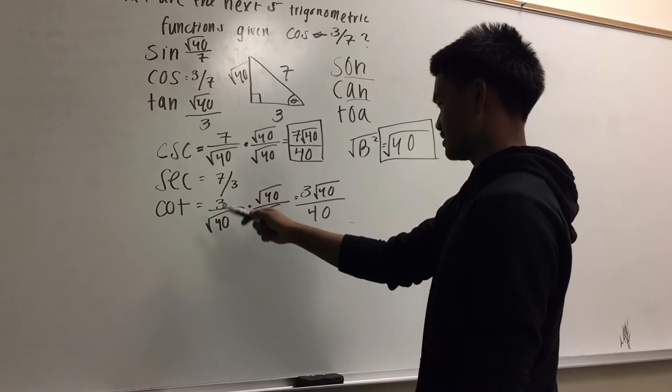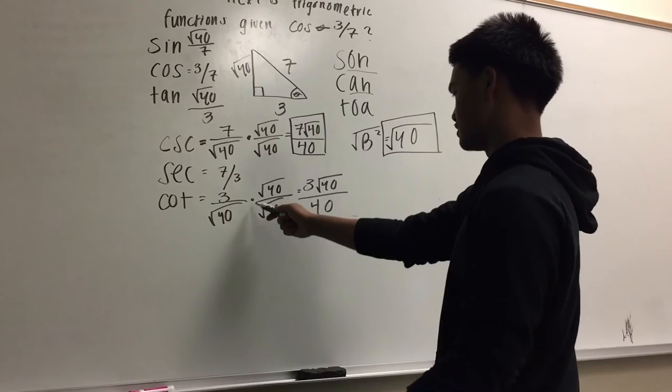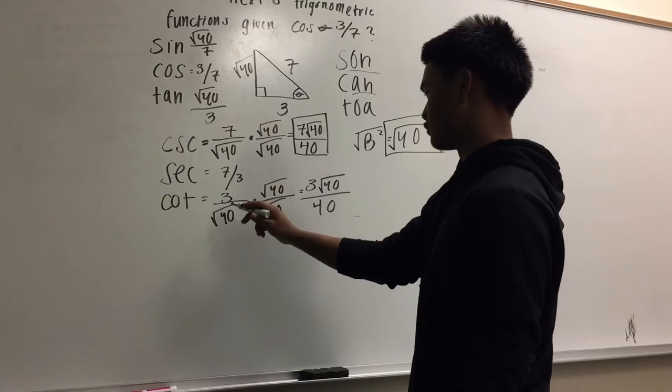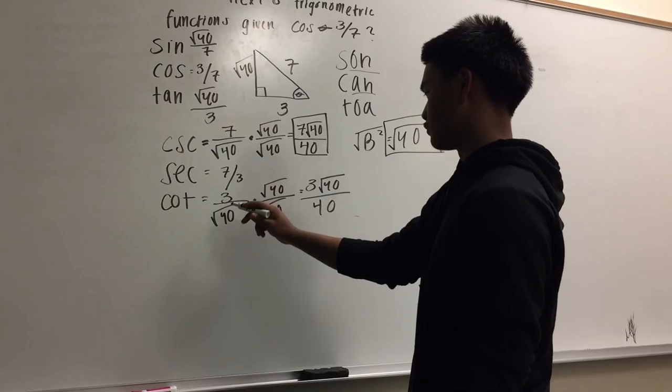As you can see, rationalized because square root of 40 was on the bottom. Most mathematicians don't do that, so, rationalized by, times you 3 over square root of 40 by square root of 40, and, you end up with this answer, this is the final answer. And that concludes rationalizing.